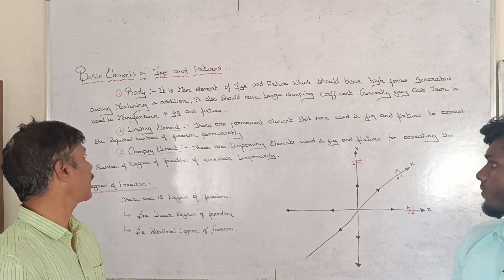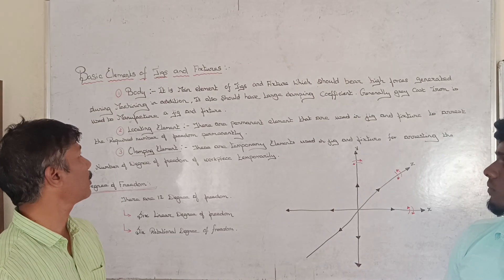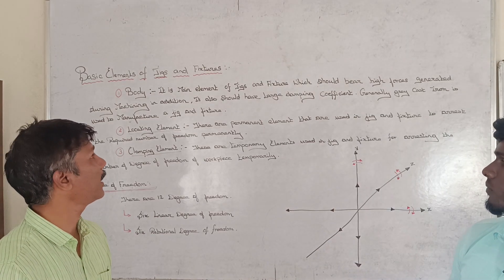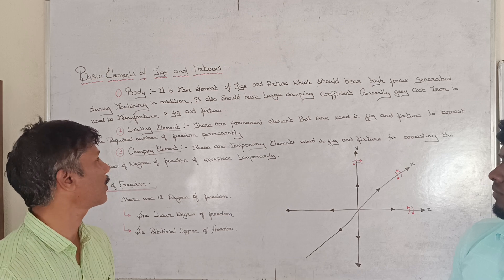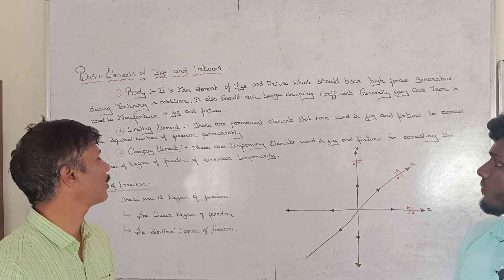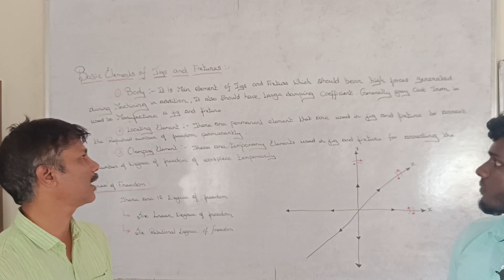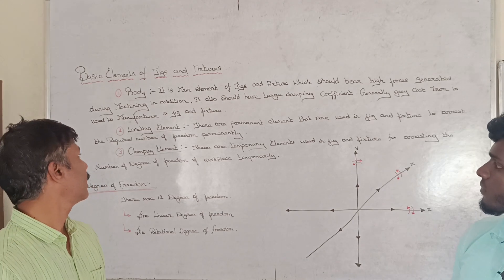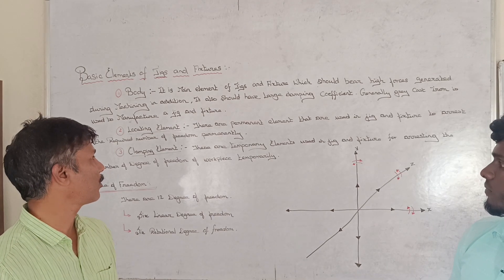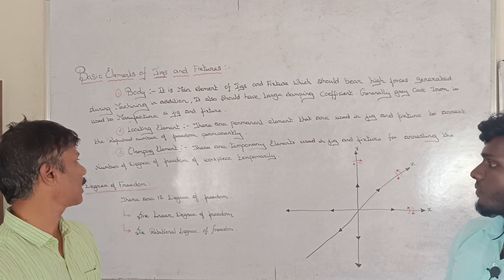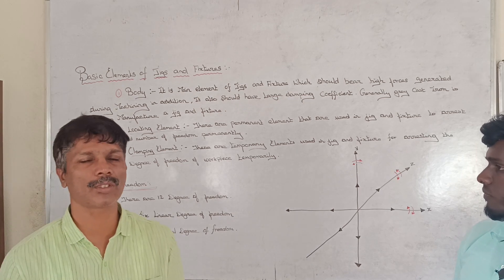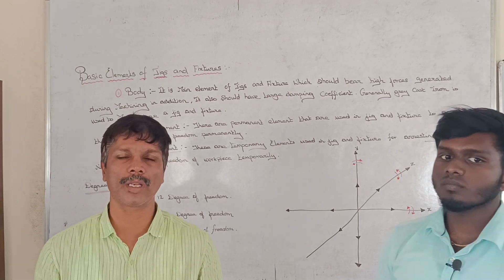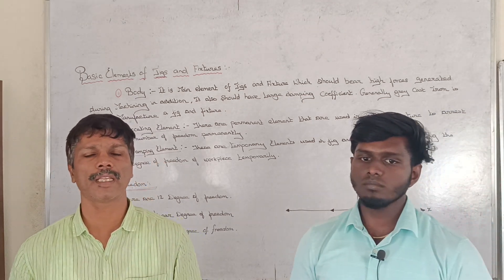To summarize, the basic elements of Jigs and Fixtures are: the body, the locating element which permanently arrests the required degrees of freedom, and the clamping element which temporarily arrests the 12 degrees of freedom. Thank you so much for your time.